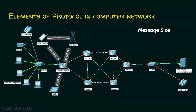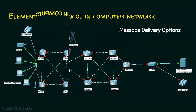After receiving all the smaller packets, the receiver reassembles all the packets. With the help of the numbering, it identifies if there are any missing packets. This is exactly what message sizing of a protocol does.